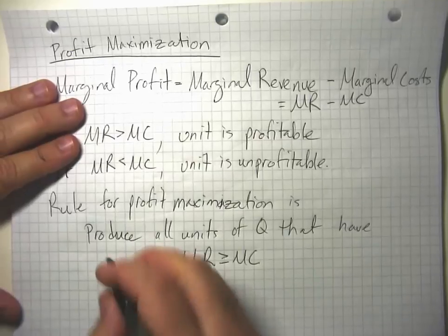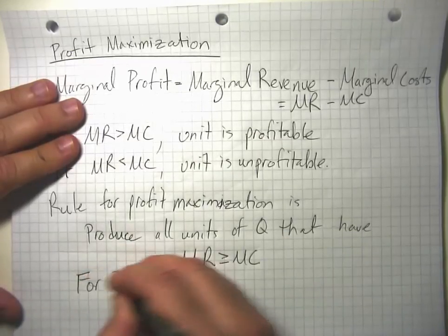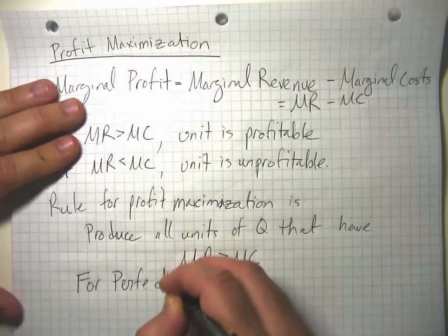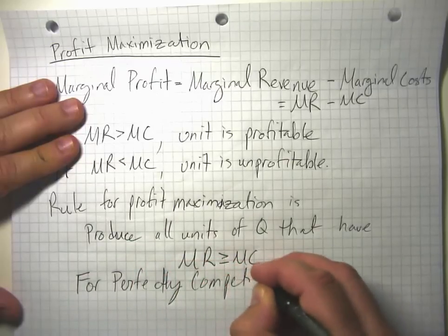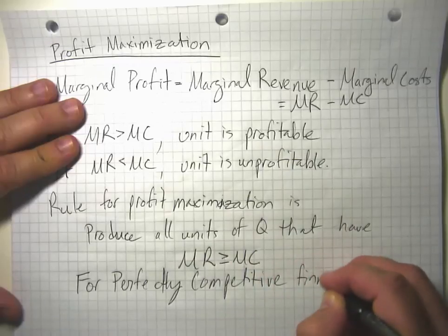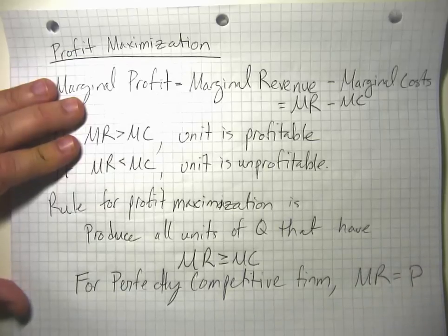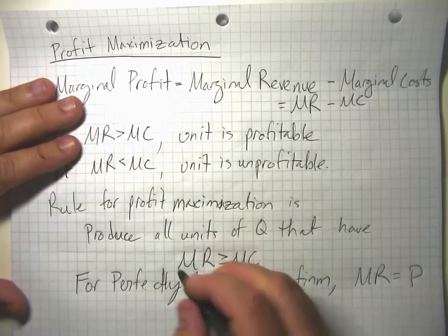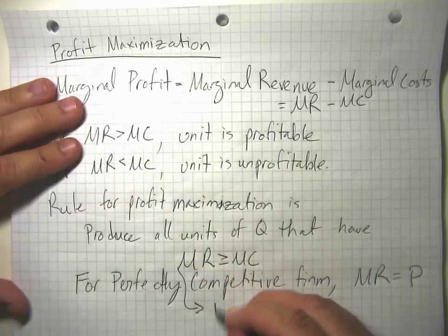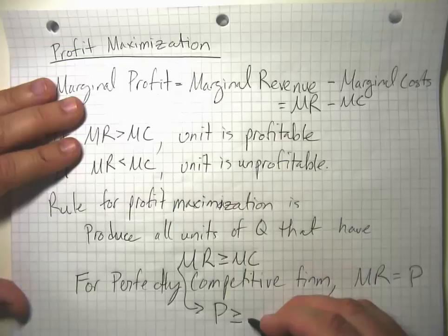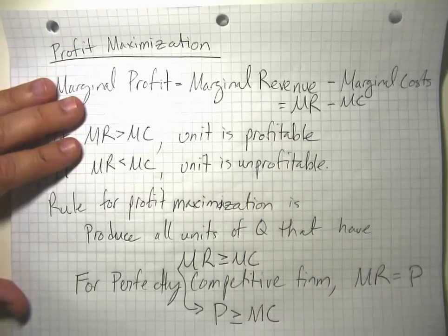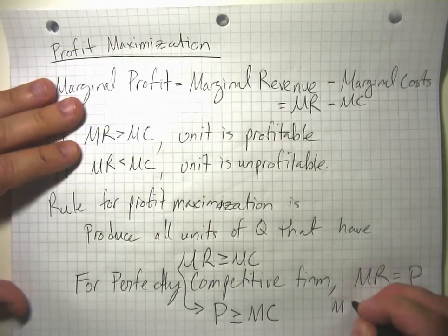In the particular case of a perfectly competitive firm, we know that marginal revenue equals the going market price, because a perfectly competitive firm doesn't have to cut prices to sell more units. So in this case, the formula becomes: produce all units that have price greater than or equal to marginal cost, or equivalently, produce all units that have marginal cost less than or equal to price.